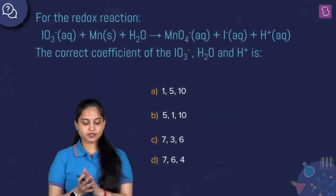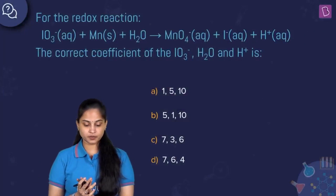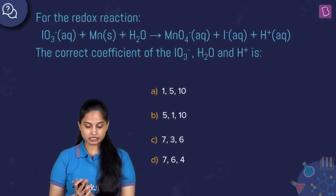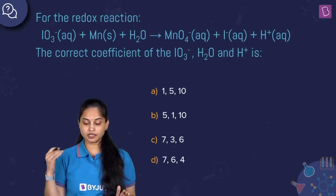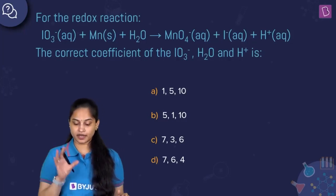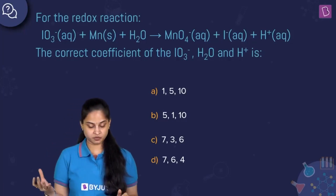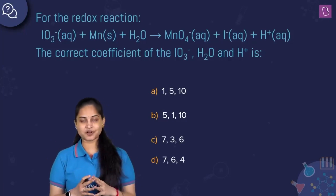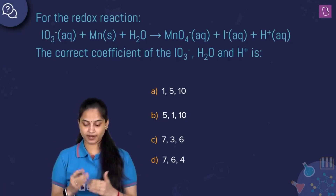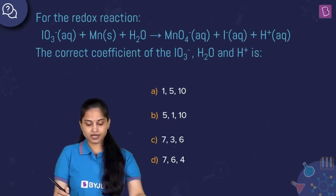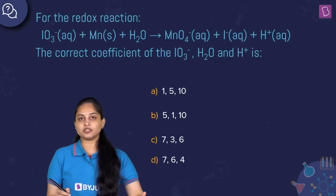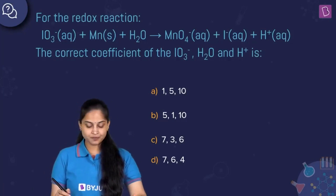The question is for the redox reaction: IO₃⁻ (aqueous) plus Mn (solid) plus H₂O gives MnO₄⁻ (aqueous) plus I⁻ (aqueous) plus H⁺ (aqueous). We need to find the correct coefficients of the iodate ion, H₂O, and H⁺. In redox reactions we need to balance this reaction.